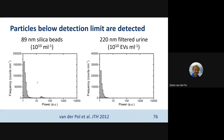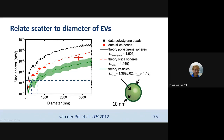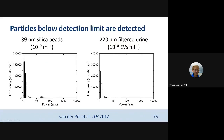Particles below the detection limit were somehow also detected with this flow cytometer — an effect we didn't anticipate. For example, if we took 89 nanometer silica beads, we didn't expect any signal from those, but we detected some power from them. The same happened for urine vesicles which we filtered so that large vesicles were gone and only vesicles smaller than 220 nanometers were left — we also got some signal, and that was more than the background we got from water.